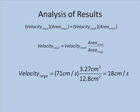When we put numbers into this equation, we have the velocity in the large pipe should be equal to 71 centimeters per second times the ratio of 3.27 square centimeters divided by 12.8 square centimeters. Or, we'd predict that the velocity in the large pipe should be 18 centimeters per second.